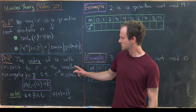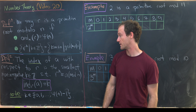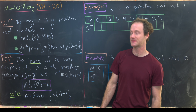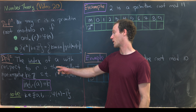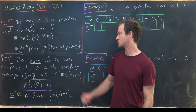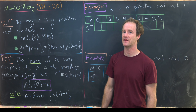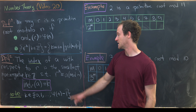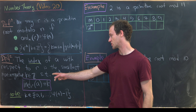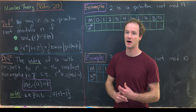Now let's look at the notion of the index, which is really like the discrete logarithm modulo n. The index of a with respect to r — where r is a primitive root and a is relatively prime to n — is the smallest non-negative integer k such that r to the k is congruent to a mod n.